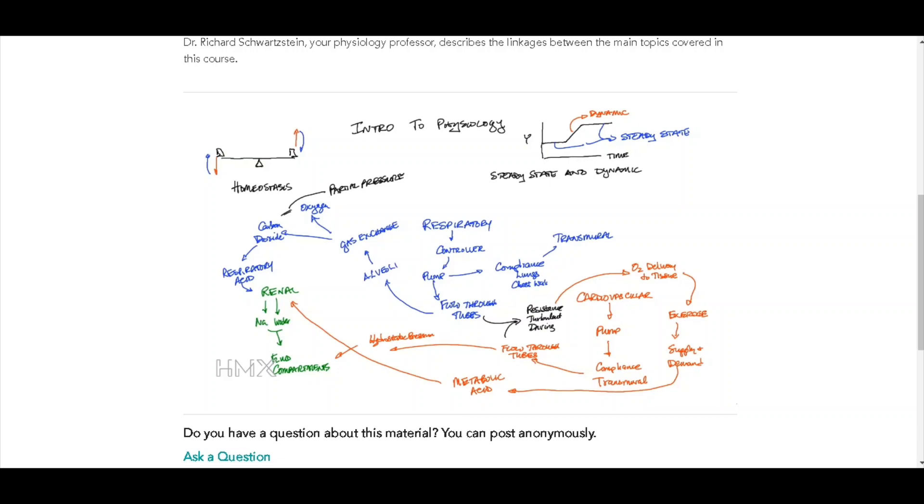So now we've provided you with an overview of these three organ systems: renal, respiratory, and cardiovascular. And we've given you a sense of the various topics we will be addressing.